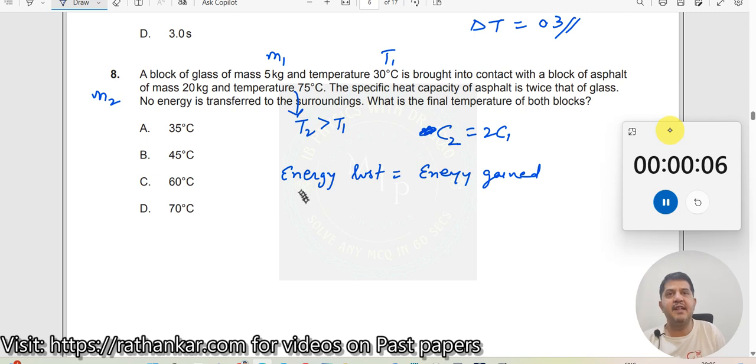Now who loses energy? Asphalt loses energy, which should be M2, C2, into, since it loses energy, the temperature will also become lower, which should be T2 minus T. Let T be the final temperature. This should now be equal to M1, C1 into, so glass gains energy, which should be T minus T1. So this becomes positive.